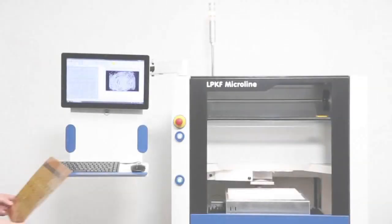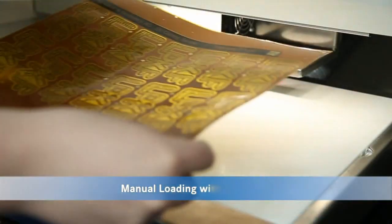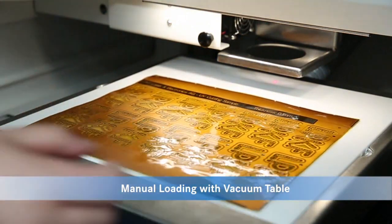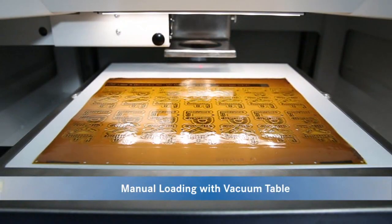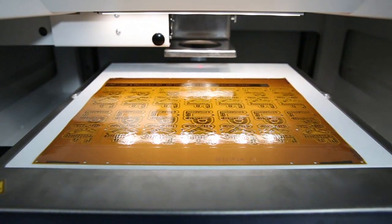The final model variant, the MicroLine 2000 P, has been optimized for cutting both unpopulated rigid and flex materials with the aid of an integrated vacuum table to ensure positional accuracy.